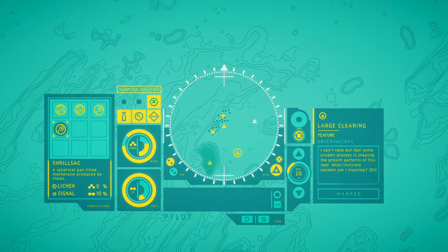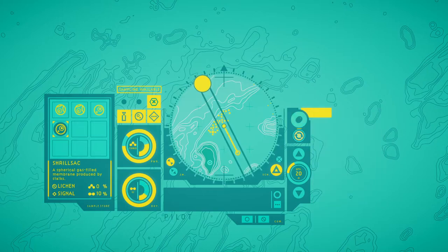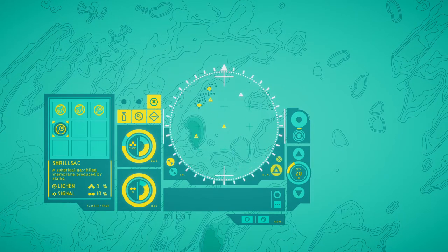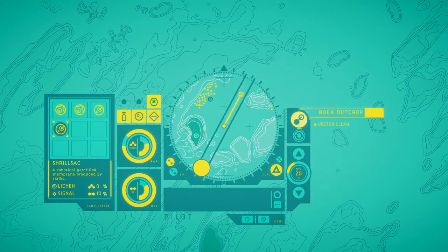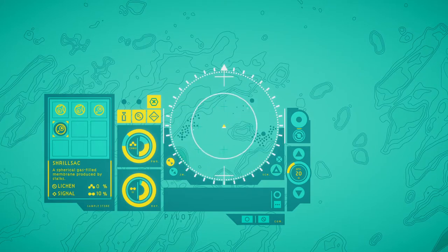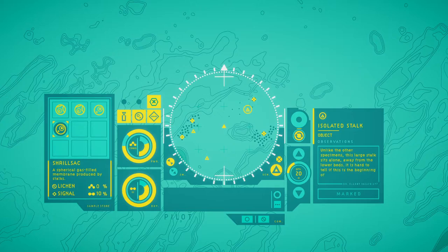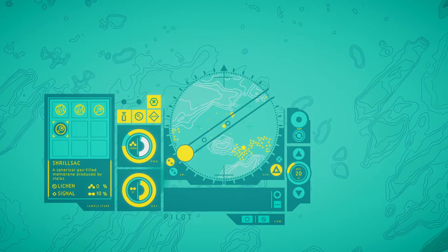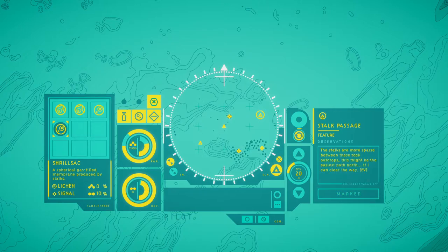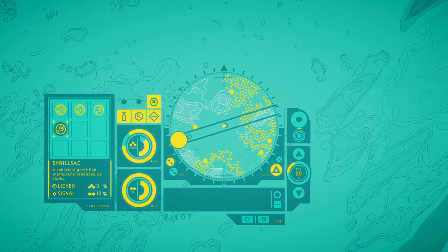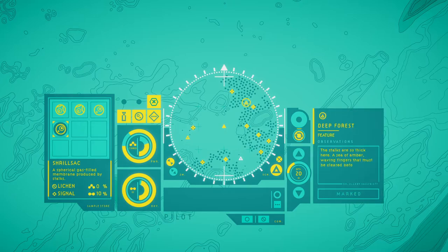I can't help but feel some unseen processes shaping the growth patterns of the reef. What invisible borders am I crossing? The scattered boulders and steep rifts of the southern reef suggest a violent geological past. Unlike the other specimens, this large stalk sits alone, away from the lower beds. It is hard to tell if this is the beginning of a colony or its end. The stalks are more sparse between these rock outcrops. The stalks are so thick here, a sea of embers, waving fingers that must be cleared before we can pass through.